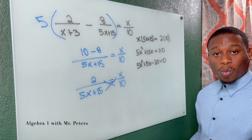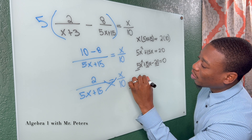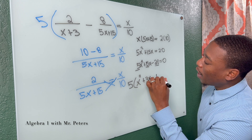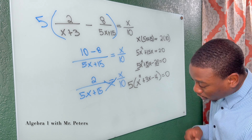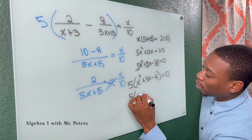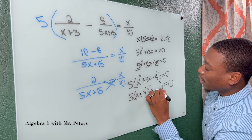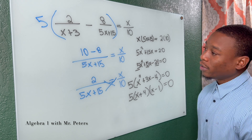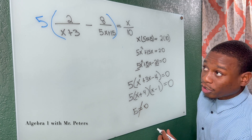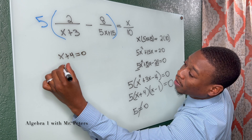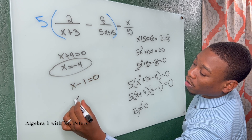Now with the quadratic equation, we need to factor. The first thing we do is pull out the greatest common factor of 5, giving us x squared plus 3x minus 4 equals 0. Factoring this, we get x plus 4 times x minus 1 equals 0. Note that 5 cannot equal 0, so we focus on the two binomial factors. Setting x plus 4 equal to 0 gives x equals negative 4, and setting x minus 1 equal to 0 gives x equals 1.